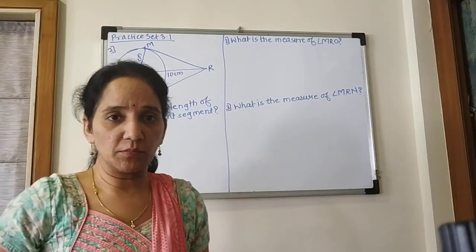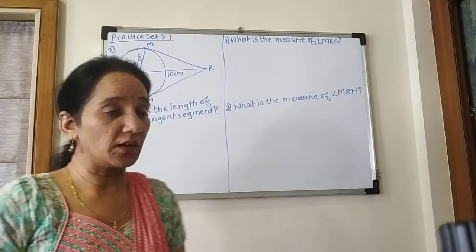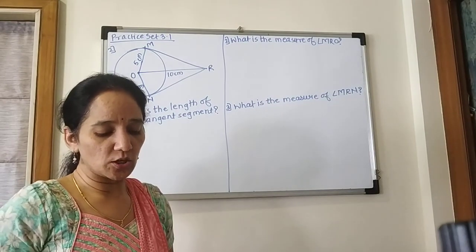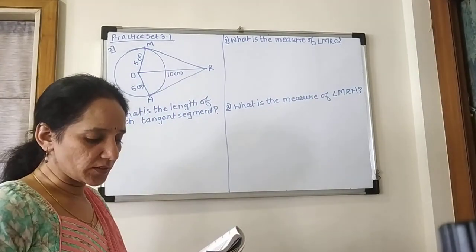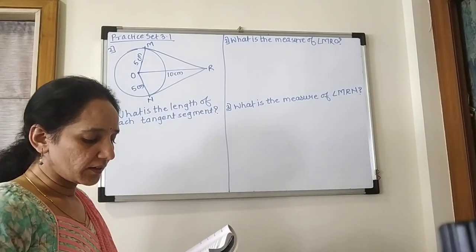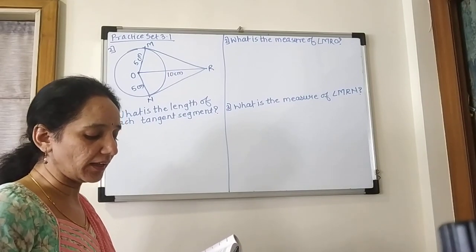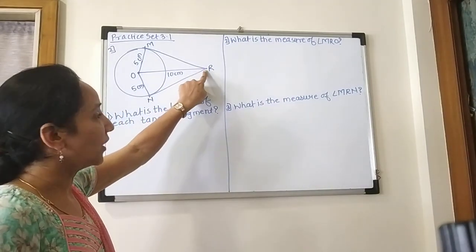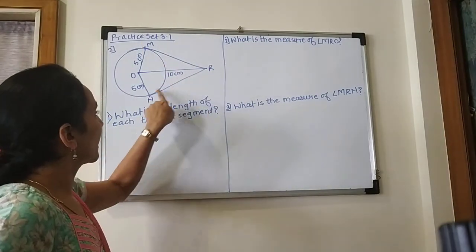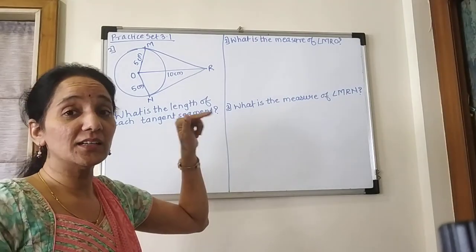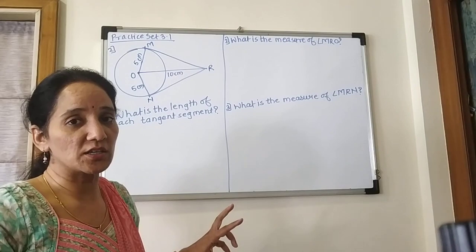So now we will see example number 2. In the adjoining figure, O is the center of the circle. From point R, seg RM and seg RN are tangent segments touching the circle at M and N. We have two tangent segments at point R, one is RM, the other is RN, where the circle touches the segments at points M and N.